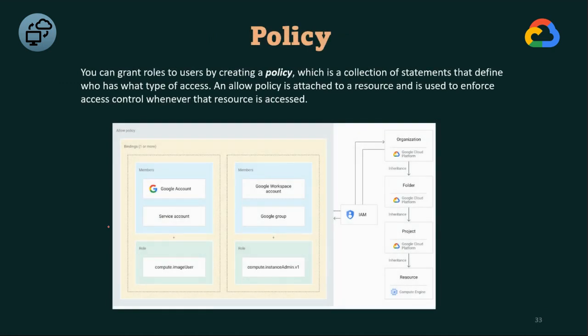Next: policy. And then resource hierarchy. These are the four major concepts in IAM: first, identities; second, roles; third, policy; fourth, resource hierarchy.